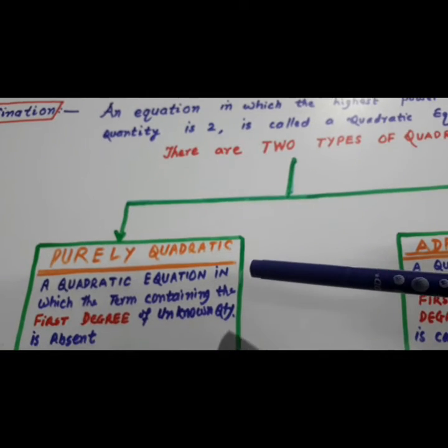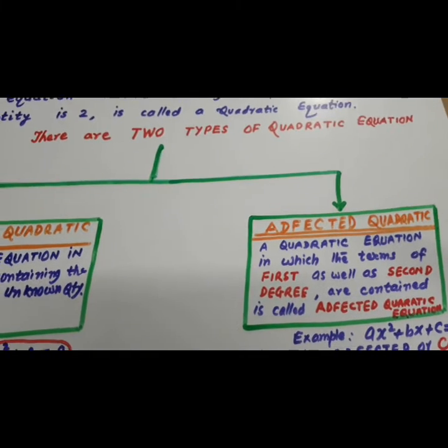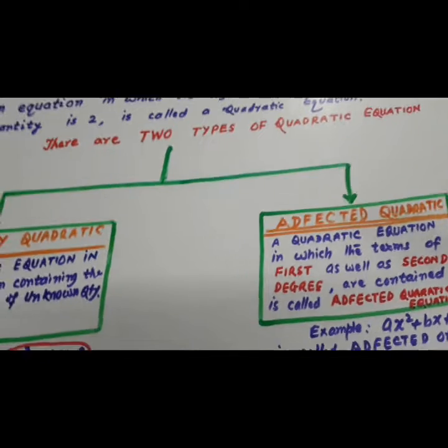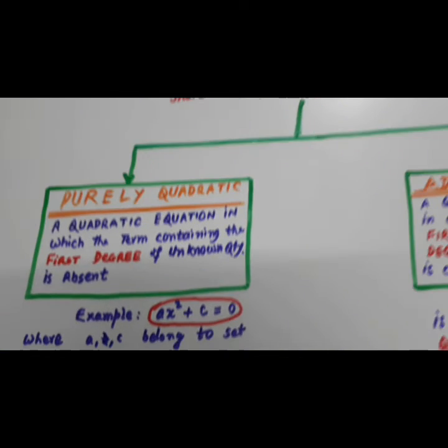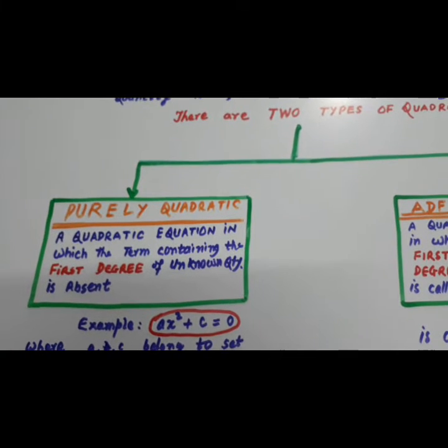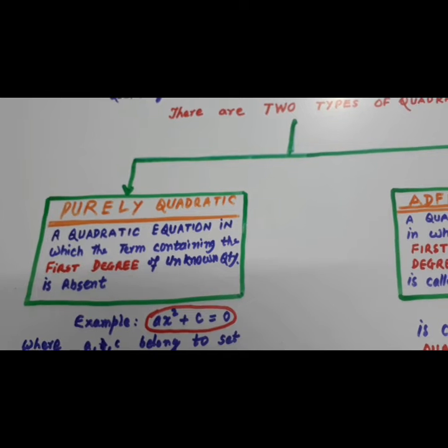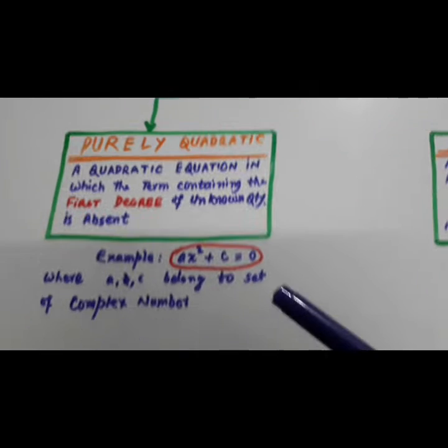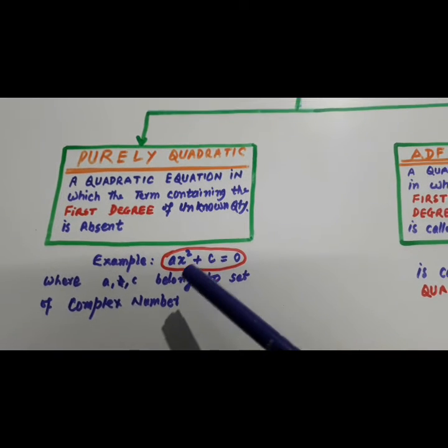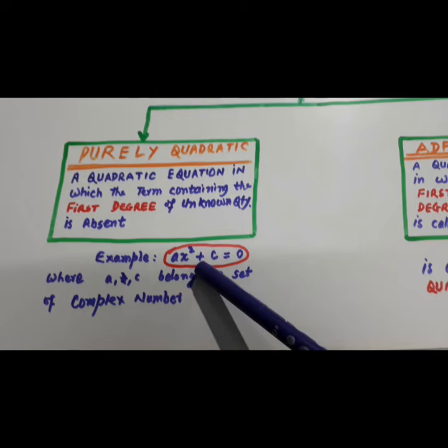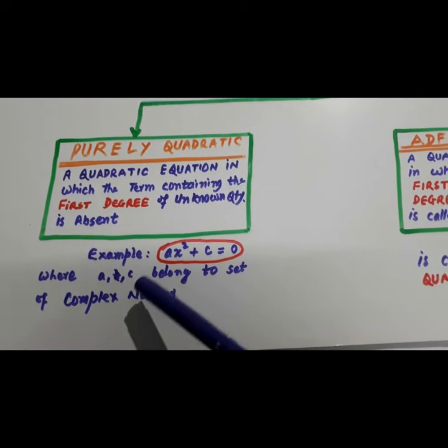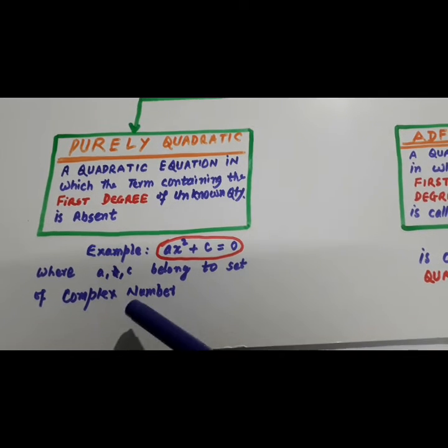One is purely quadratic and second one is a defected quadratic. A quadratic equation in which the term containing the first degree of unknown quantity is absent. Now, look here. Here Bx is missing. Where A and C here belong to the set of complex numbers.